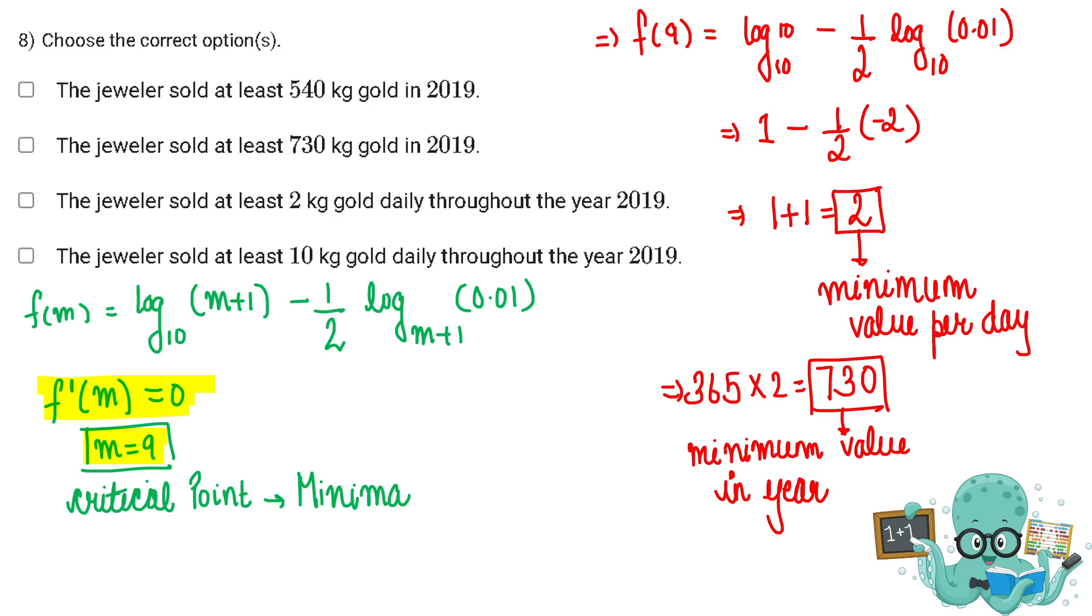By comparison we found out that m equals nine is a point of minimum. Therefore m की value जब nine डाल रहे हैं तो जो function का output होगा that will be the minimum value of the function. So f of nine calculate करो, basically m की जगह nine put कर देना.